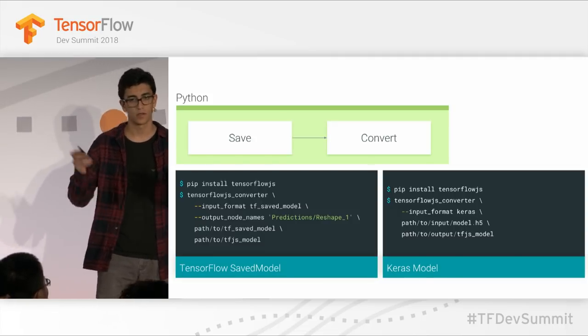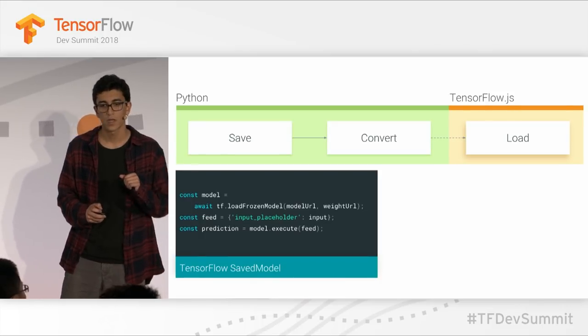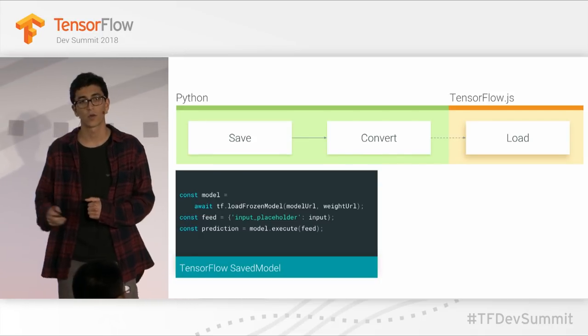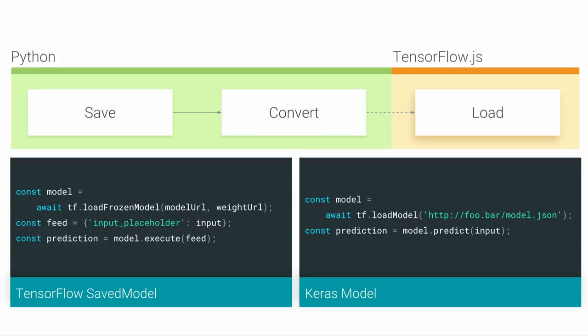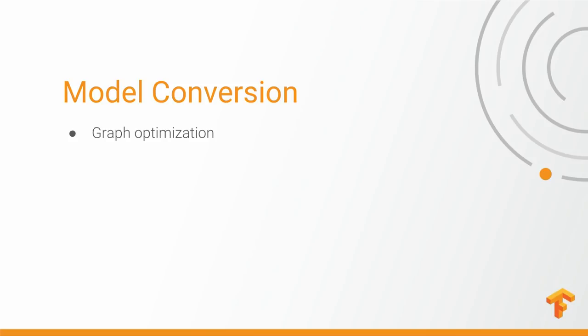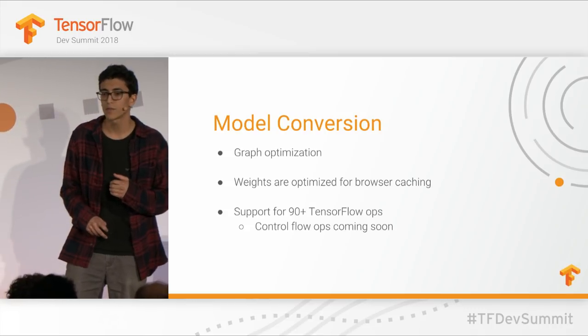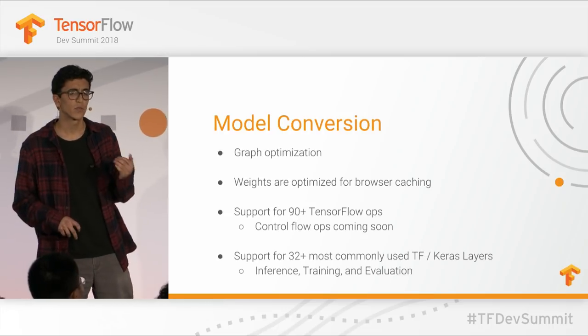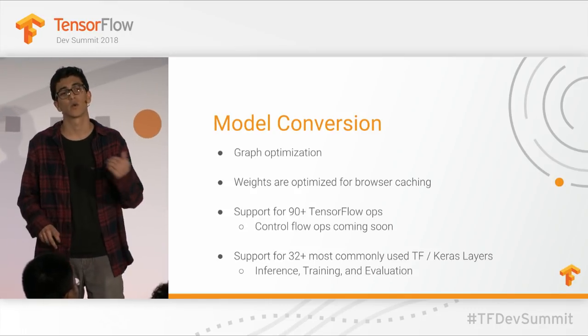You statically host those files on your website — just simple static hosting. On the JavaScript side, we provide an API that lets you load that model. For the TensorFlow SavedModel, note it is a frozen model — we don't currently support continuing training of it. For the Keras case, we do let you continue training, and we're working hard to keep these APIs aligned. Under the hood, we do graph optimization — pruning nodes you don't need to make a prediction. We optimize weights for browser auto-caching, packing and sharding in chunks of four megabytes. Today we support about 90 of the most commonly used TensorFlow ops, 32 of the most commonly used Keras layers, and we let you do evaluation and make predictions from the model.